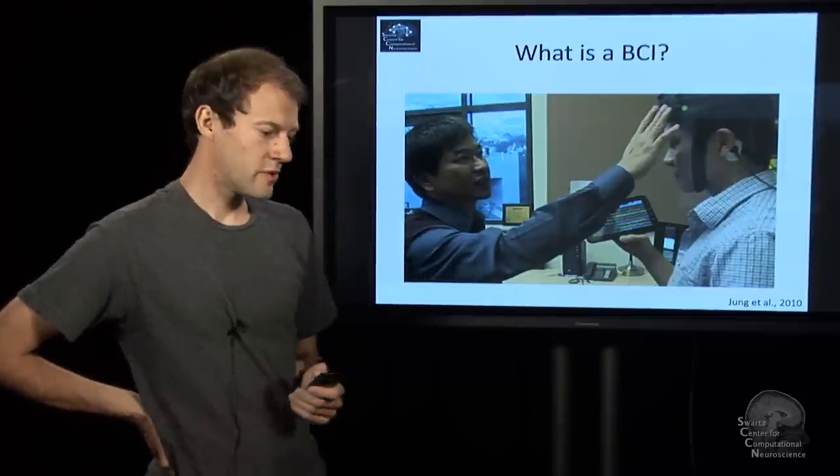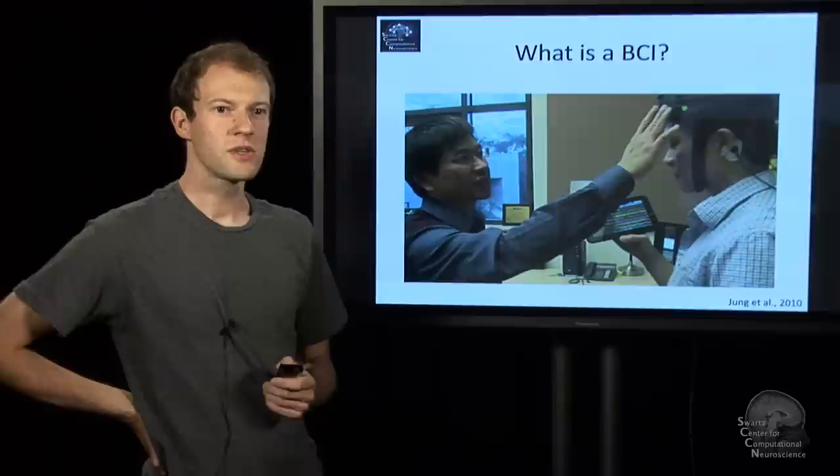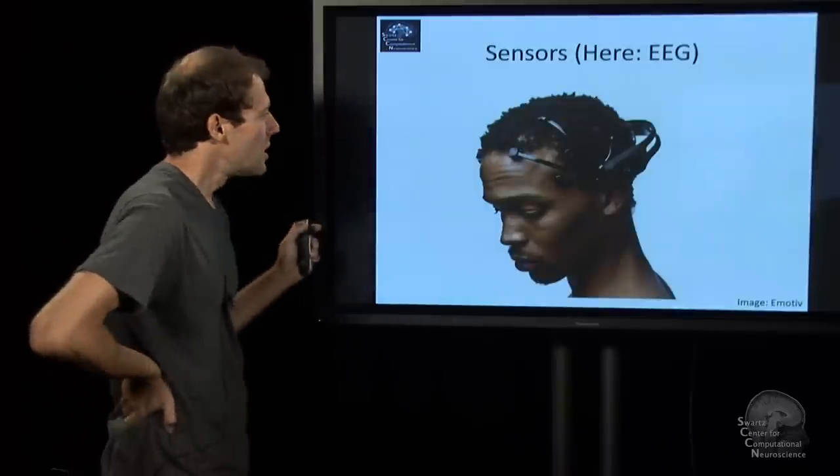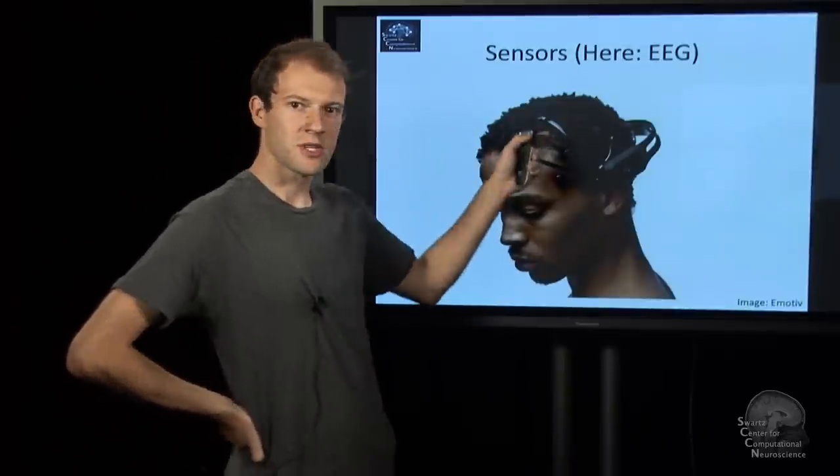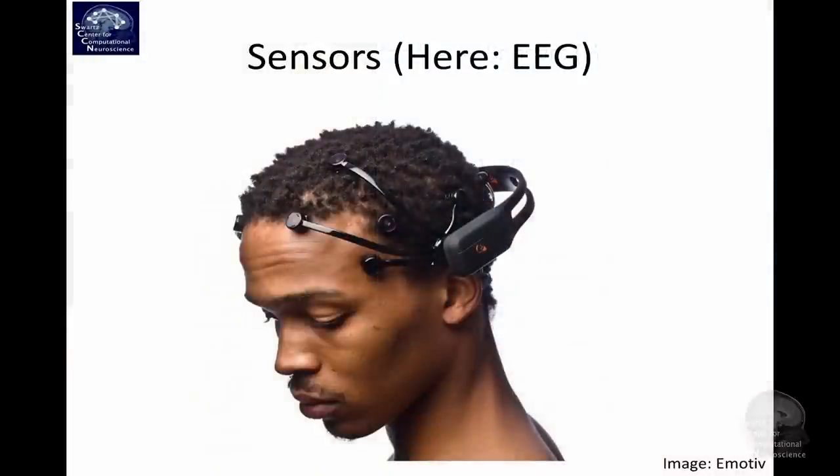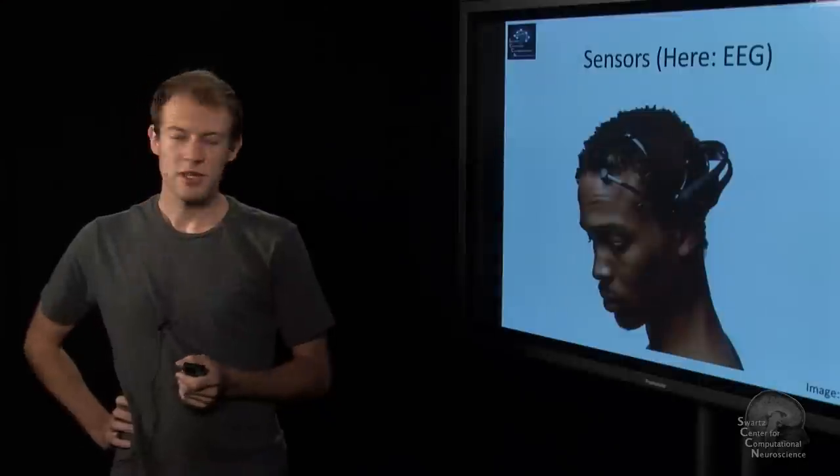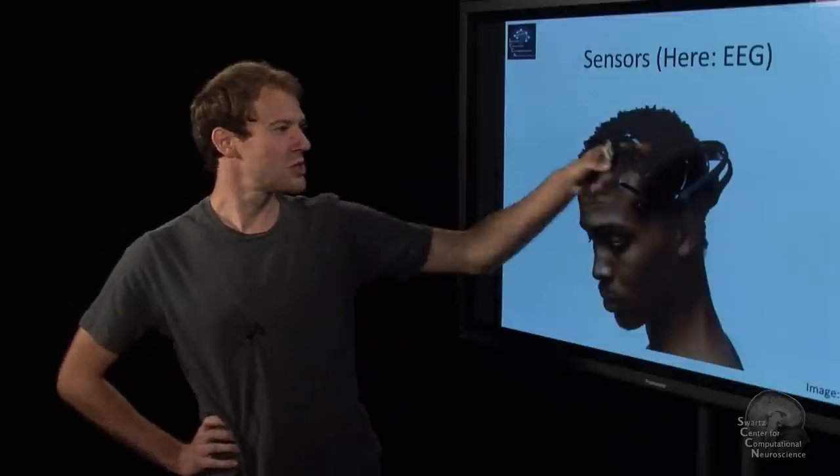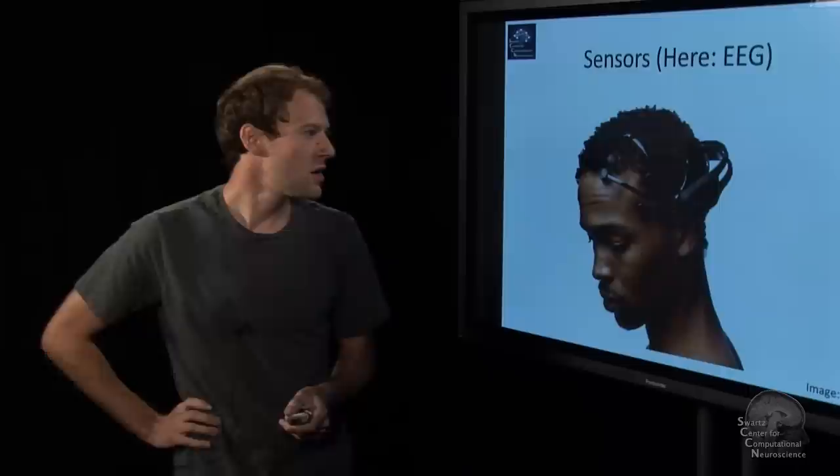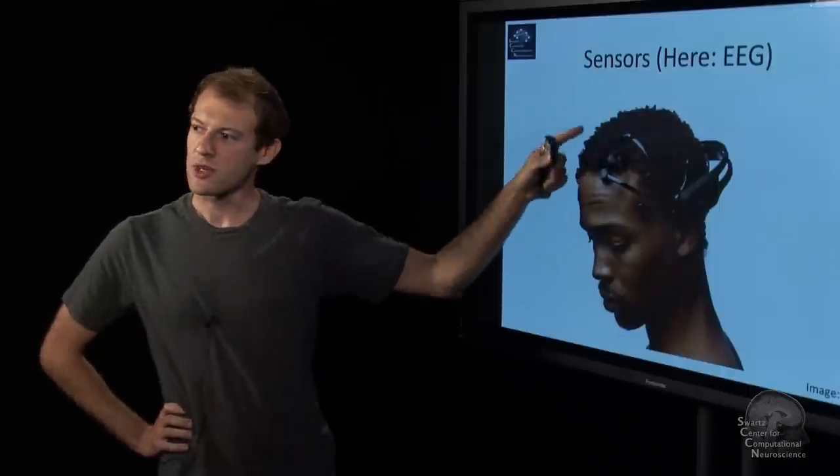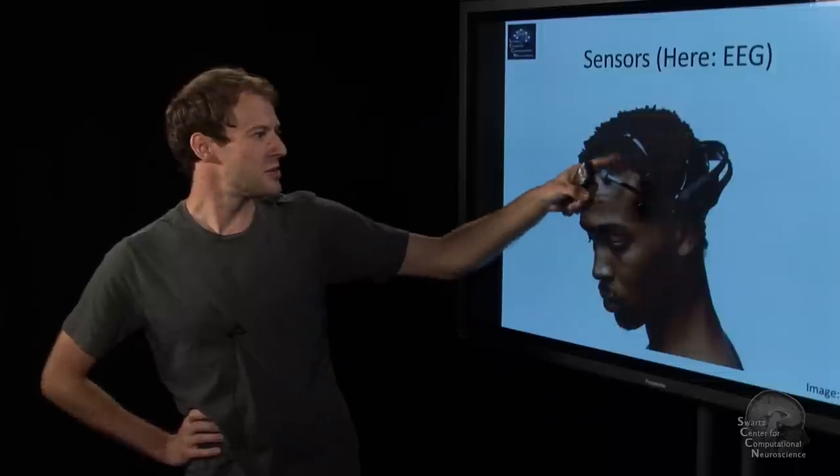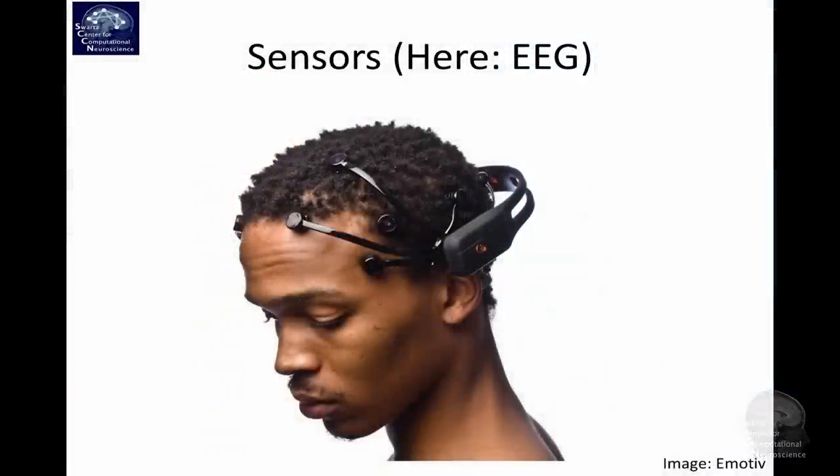So when I say measuring brain activity, how does that actually work? There is a lot of different sensor technologies that can be used. Here's one example that's EEG, or electroencephalography, which is one of the most useful. You might know this from the hospital where EEG is used a lot. But there is also much sleeker devices like this one from Emotive here, which essentially measure the electrical potential at the scalp.